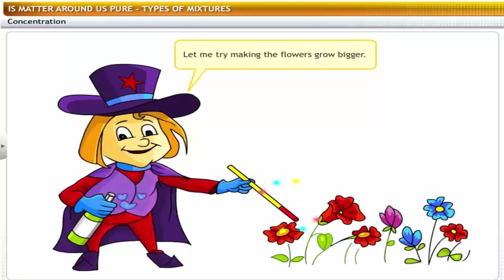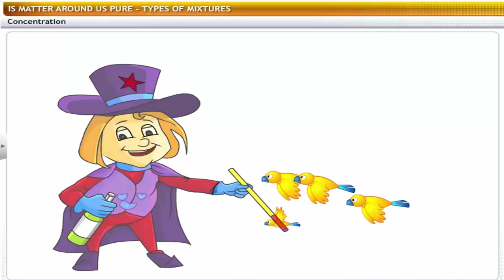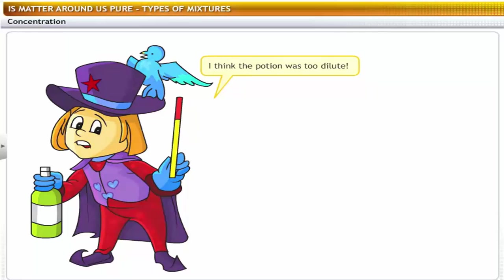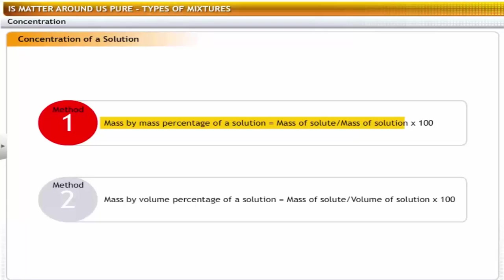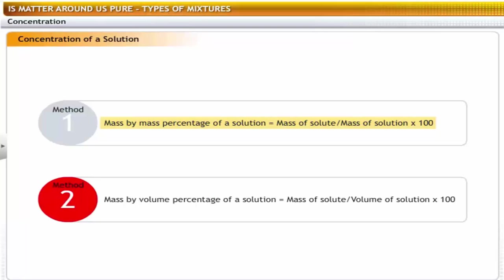Concentration is defined as the amount of solute present in the unit volume of a solution. A solution that contains a relatively smaller quantity of solute as compared to the solvent is known as a dilute solution. The concentration of a solution can be expressed using two methods: mass by mass percentage = (mass of solute / mass of solution) × 100; and mass by volume percentage = (mass of solute / volume of solution) × 100.